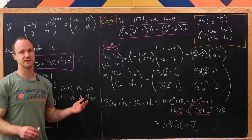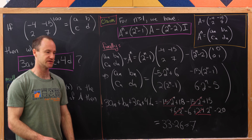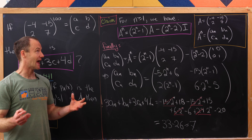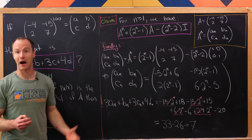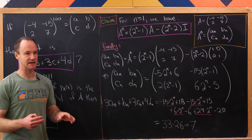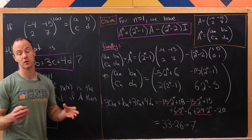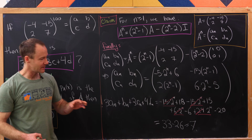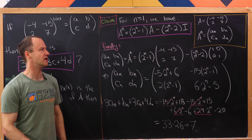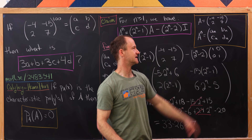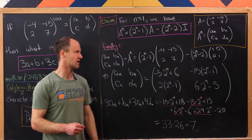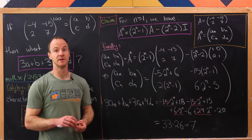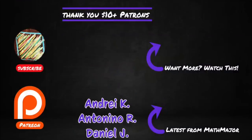I like this approach because it doesn't require mucking around with diagonalization, eigenvectors, and eigenvalues. I also like the exploratory step where we looked at cases to guess the general form for the matrix power — that's a powerful idea. Since this is always fixed at 7, there's probably another way using direct induction on powers of A. Post in the comments if you get that to work, and thanks for watching!